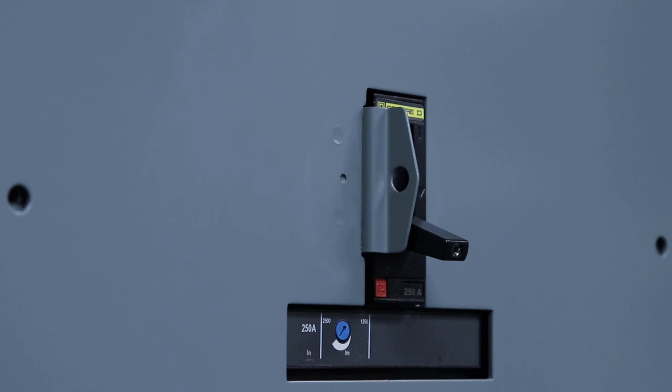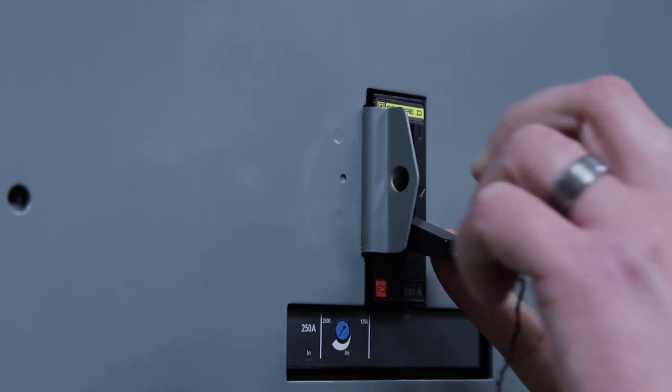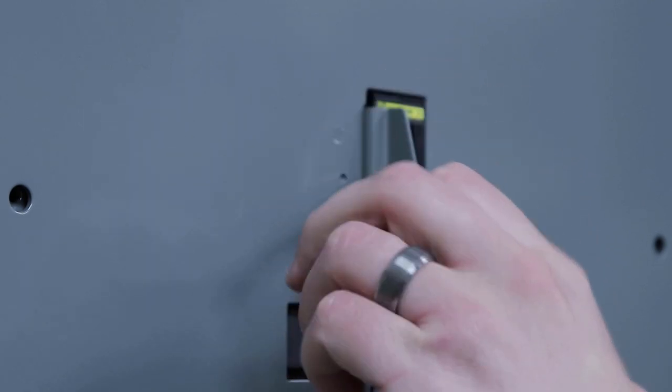To padlock the breaker in the off position, you'll simply have it in the off position and slide the padlock through this hole.